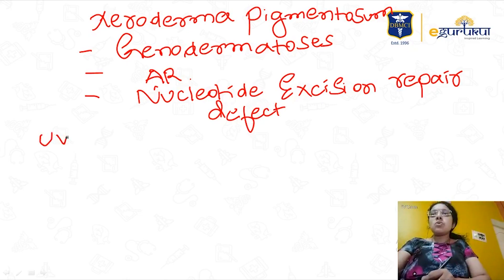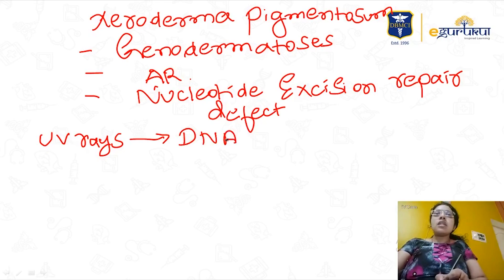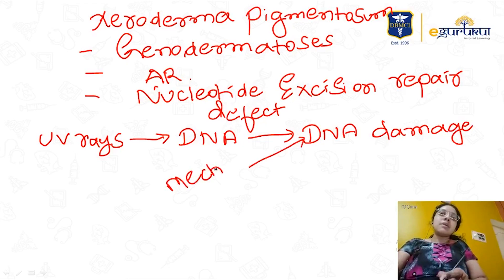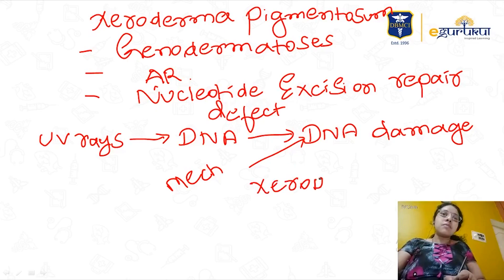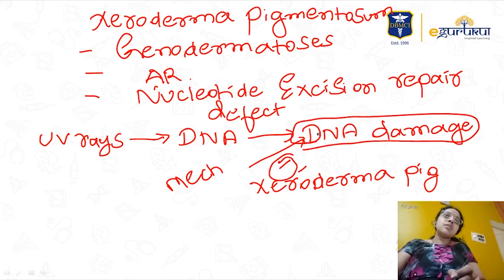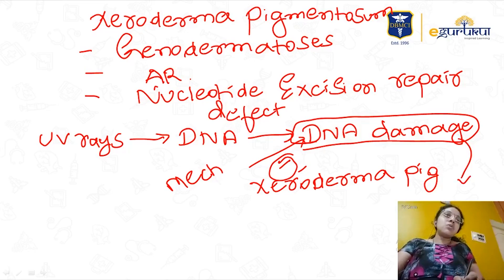Whenever you are exposed to UV rays, it causes DNA damage. The body has a mechanism to correct this, but in xeroderma pigmentosum this mechanism is impaired. The nucleotide excision repair defect leads to DNA damage, which can predispose the person to malignancies.